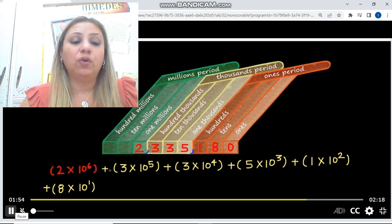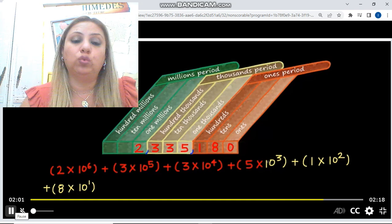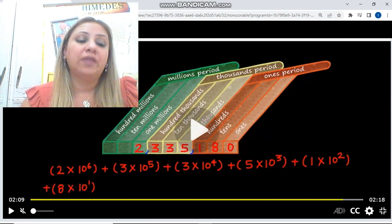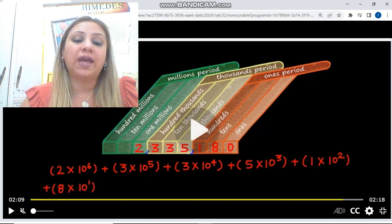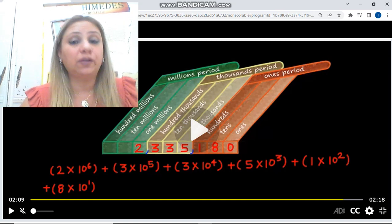We all know that numbers can be written in three ways. The standard form, which is the normal way to write the number, which is 2,335,180. And the expanded form is when you write the number using the powers of 10, and you find the sum of the numbers. When the numbers are separated by addition, that means you are writing the expanded form.